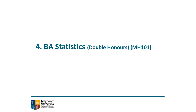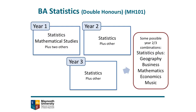And finally, introducing our double honors Bachelor of Arts Statistics program. You will start in first year by taking stats, maths studies, and two other subjects of your choice. Then in years two and three, you will take stats and another subject of your choice. Some interesting combinations could be stats and geography, stats and business, or stats and economics. In meteorology, for example, the skill set of a graduate with a background in statistics and geography would definitely be highly sought after.